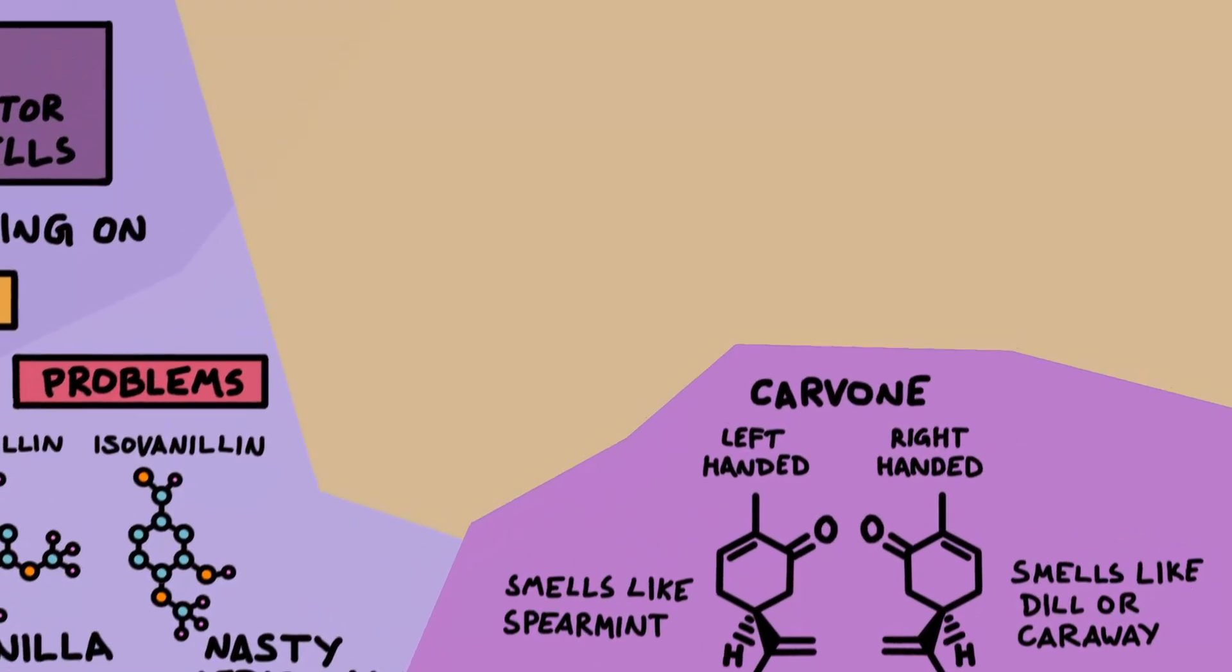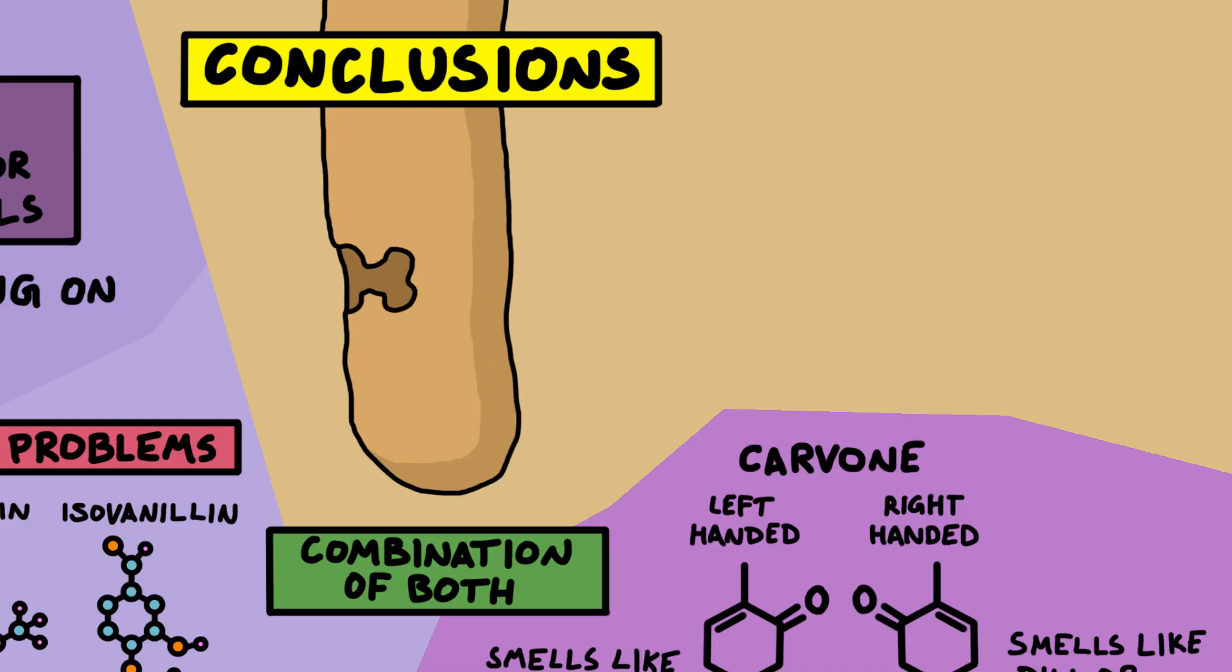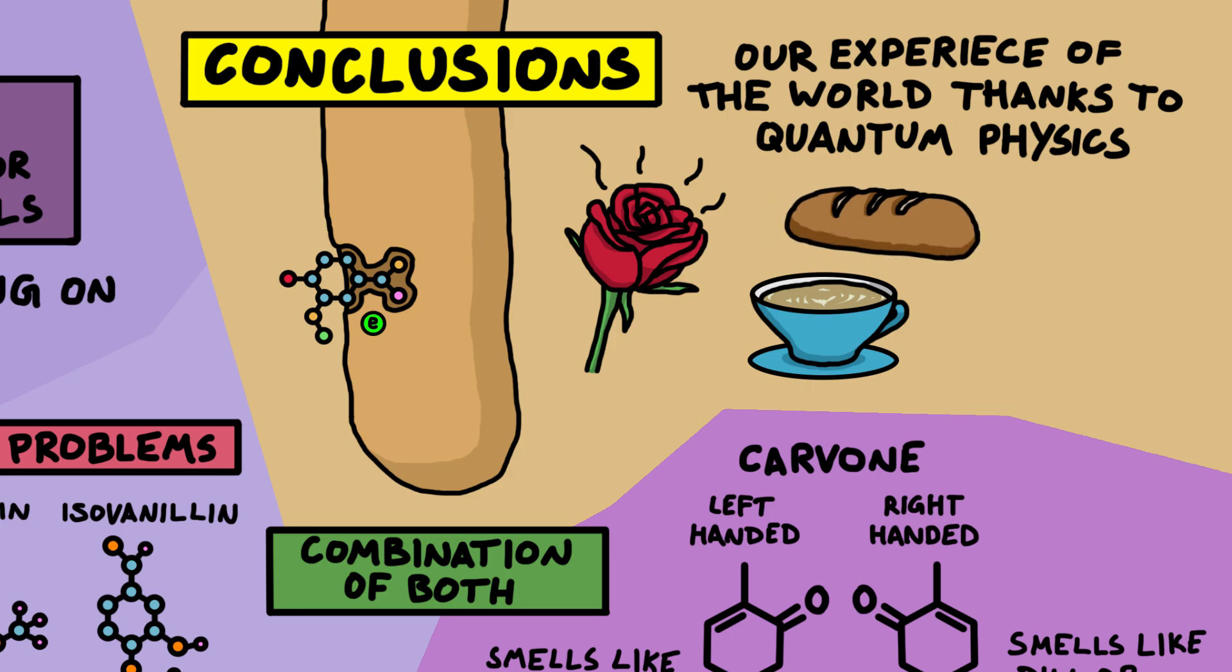So what can we conclude from all of this? It seems like you need both the shape model and the vibration model to explain how we smell. Perhaps our receptors first check the shape of the molecules, and then if they get past that barrier they are checked for their resonance vibrations through quantum tunneling. But we won't know exactly how this works until we can figure out a way of directly observing the receptor sites in action. But isn't it crazy to think that these experiences of smell we have, of a flower or coffee or freshly baked bread or a newborn baby, this experience of the world came to your brain through something as strange as quantum tunneling.